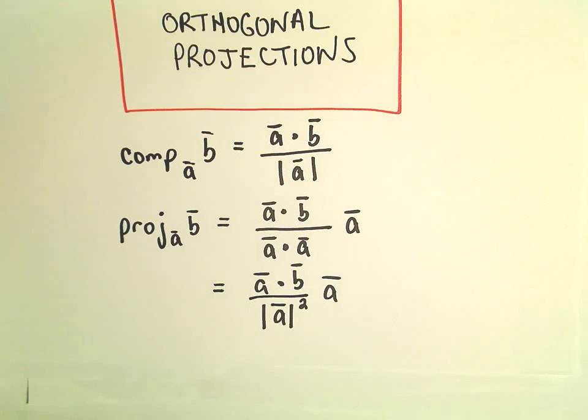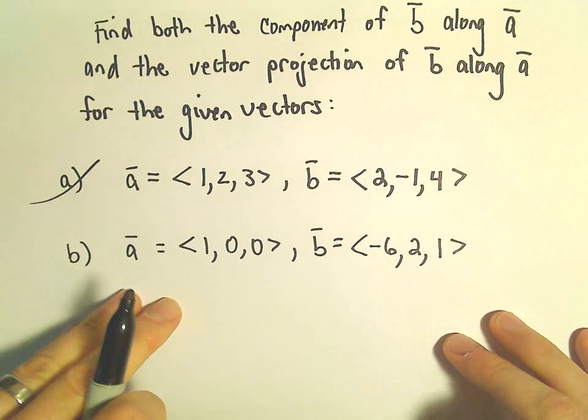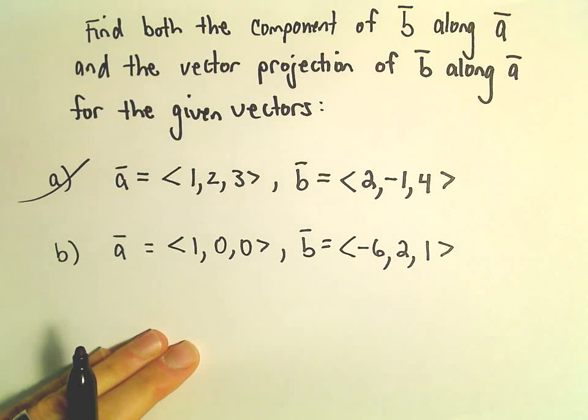Alright, so just one more example here of finding components of vectors along other vectors and projections of vectors onto other vectors. So we did part A here before, so we're going to do the same thing. We'll find the component and the projection of B along A.